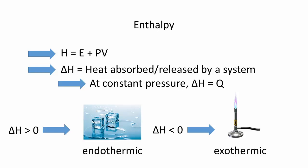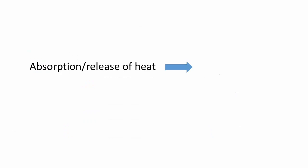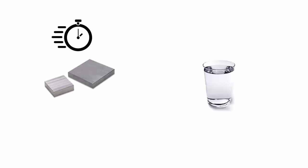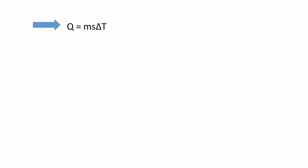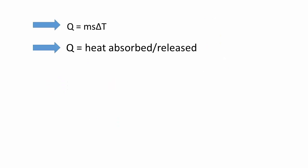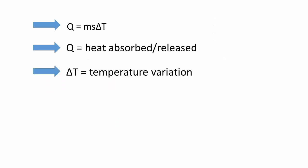How the temperature changes upon absorbing or releasing heat is an important consideration. Some objects cool and heat rapidly, such as a metal, while other substances cool and heat rather slowly, such as water. This is because metals have a low specific heat, while water has a high specific heat. The relationship between temperature change and the amount of heat lost or gained is given by the formula q equals ms delta t. The greater the mass and specific heat, the smaller the temperature change.